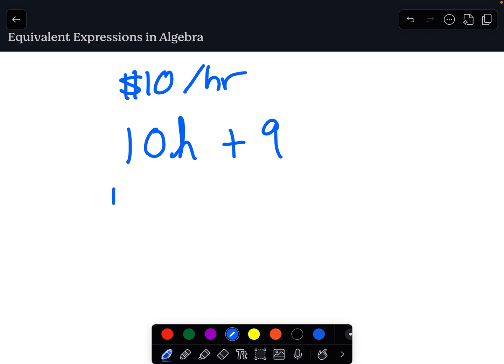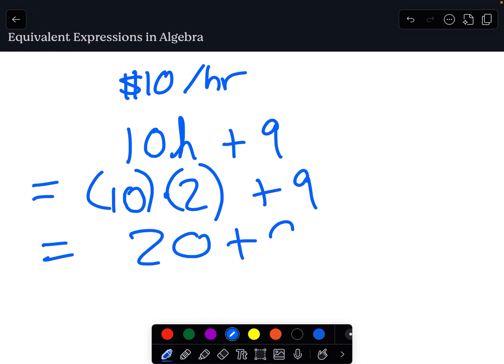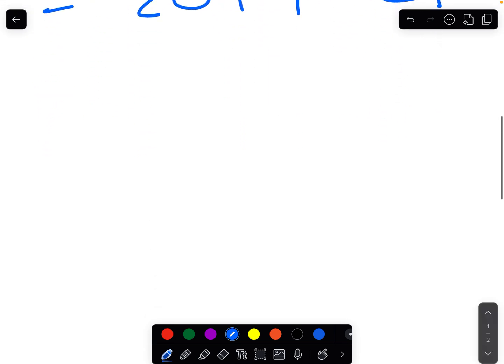So again, I go over there for let's just say it's just two hours. Then it would be 10 times 2. Remember, this dot represents multiplication. We could also use parentheses next to each other and that also represents multiplication. 10 times 2 plus 9. We always have to follow the order of operations. And so now we have 20 plus 9 and I would make 29 dollars.